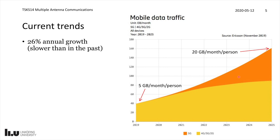Just to break down this number, because an exabyte is something that is very hard to comprehend: if we take that number and divide by the around 8 billion people in the world, then in 2019 we have around 5 gigabyte per month per person on average. There are some parts of the world where we have 2 times this or even more, while other people still lack basic connectivity. That will grow up to 20 gigabyte per month per person in the world on average in 2025.